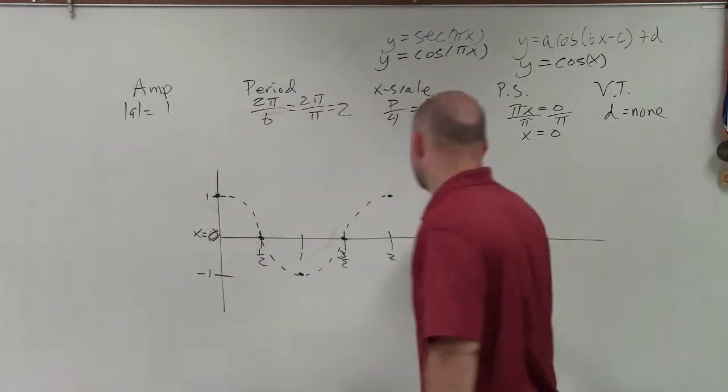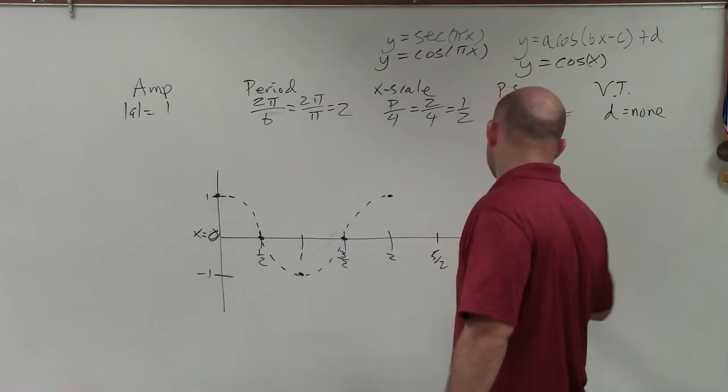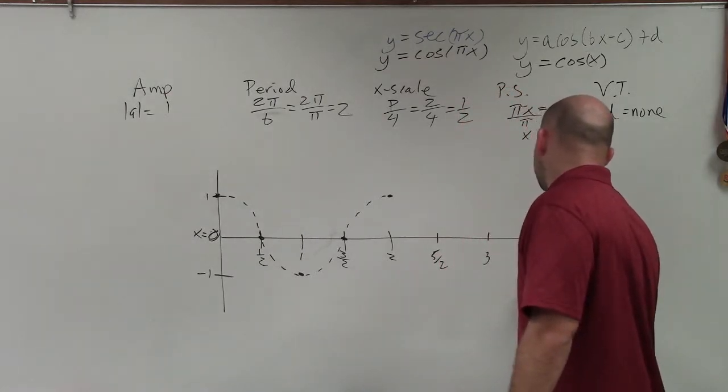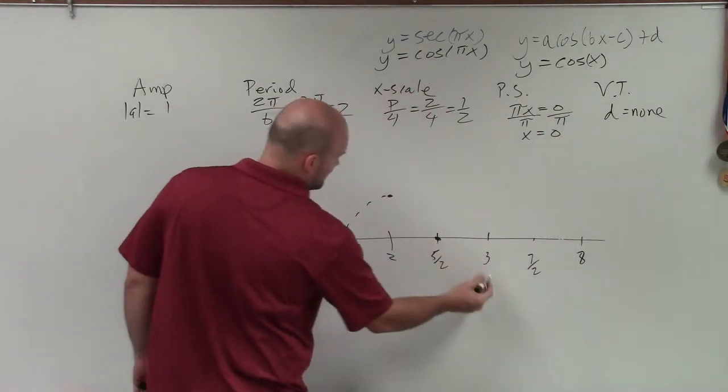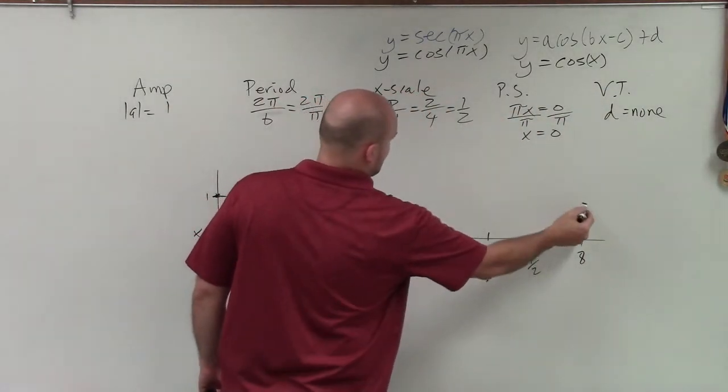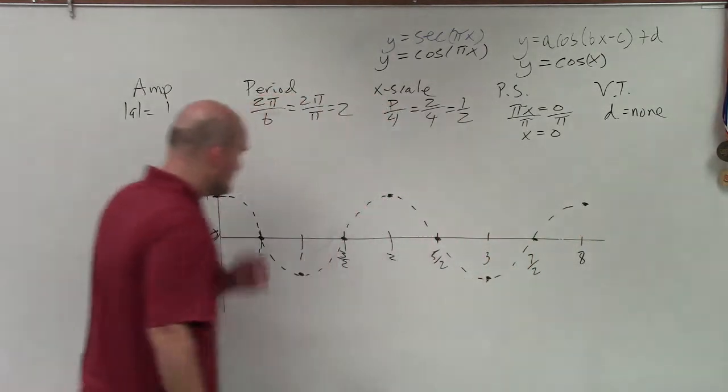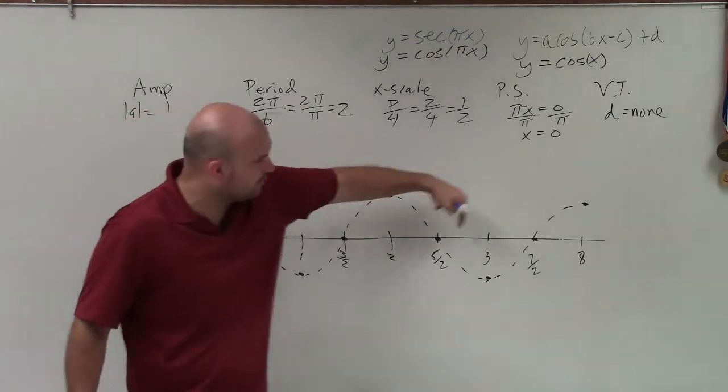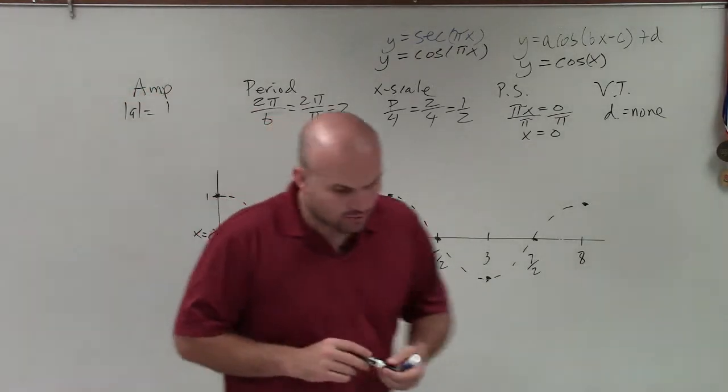And now I need to continue on. So that's 4 halves, so this would be 5 halves, 3, 7 halves, 8. And now I just kind of continue the pattern. OK. So what I did was I just kept on adding 1 half, and I wanted to do two periods.